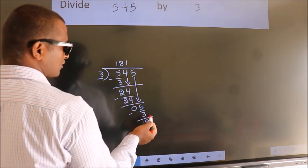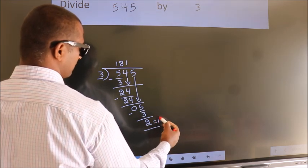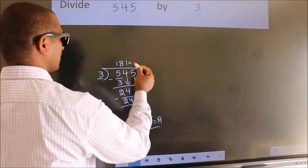No more numbers to bring it down. So we stop here. This is our remainder. This is our quotient.